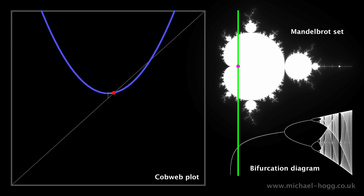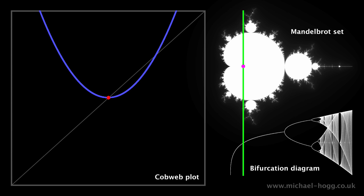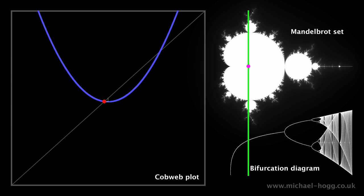In the top right corner is the normal view of the Mandelbrot set. On the left is a graph known as a cobweb plot, which shows what's happening underneath the little pink dot on the green line. The blue curve represents the equation for the Mandelbrot set, z equals z squared plus c.